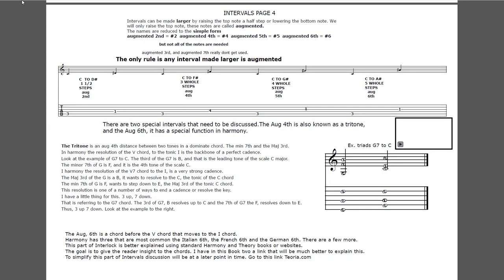Intervals page four. Now intervals can be made larger by raising the top note or lowering the bottom note - and we're only going to raise the top. These are simply called augmented. The names are reduced in simple form: an augmented second is a sharp two, augmented fourth is sharp four - one of my favorite tones - augmented fifth, sharp five, very common in jazz, and an augmented sixth, the sharp sixth.